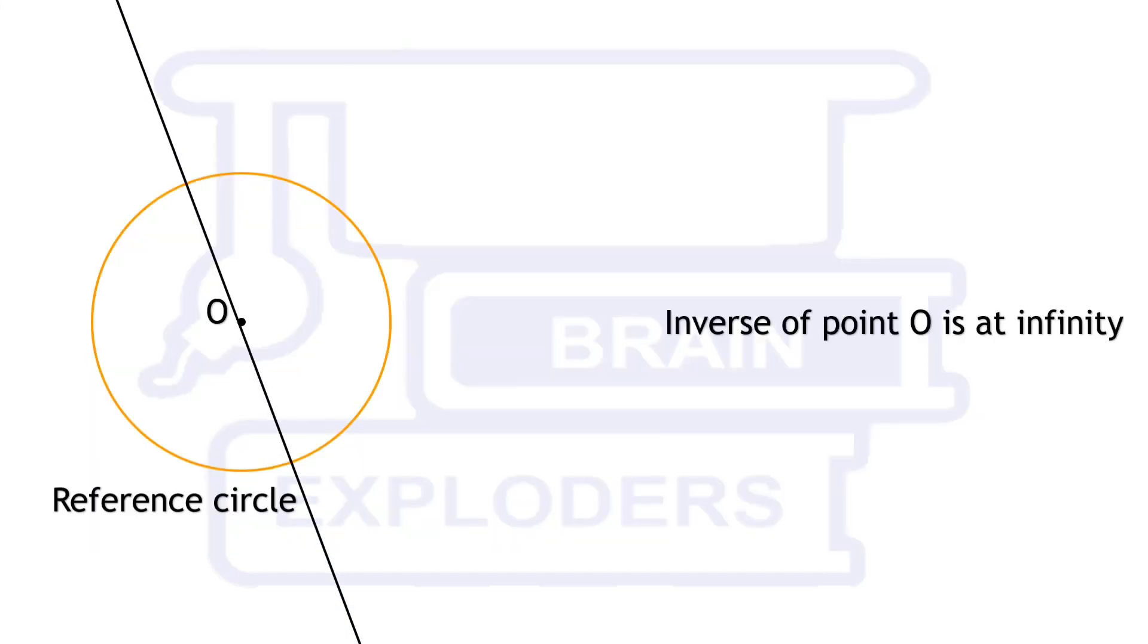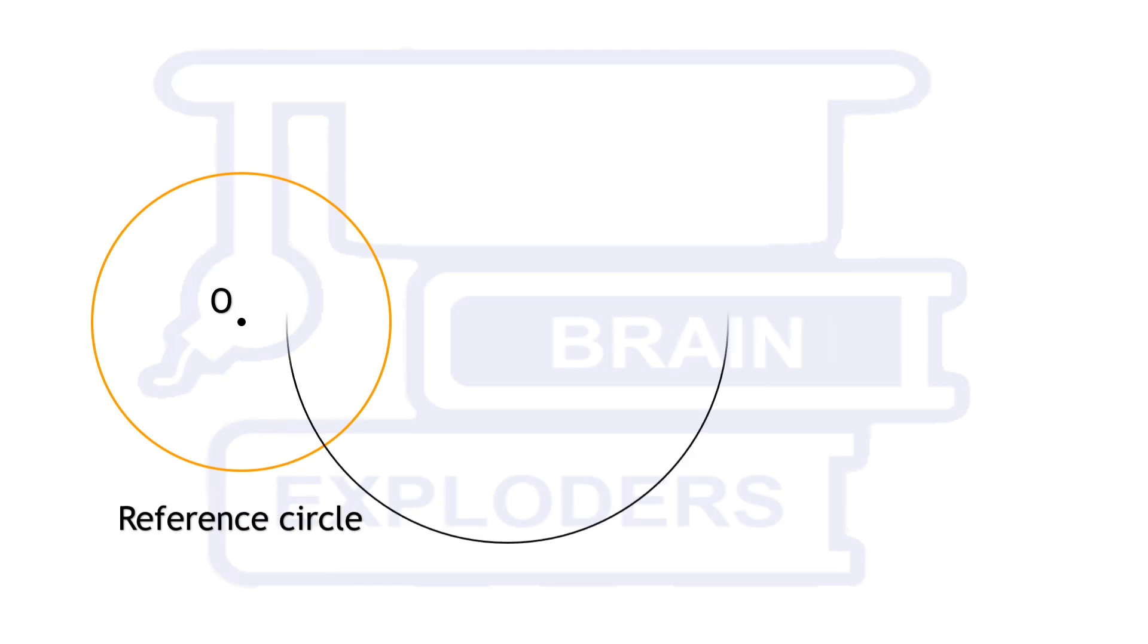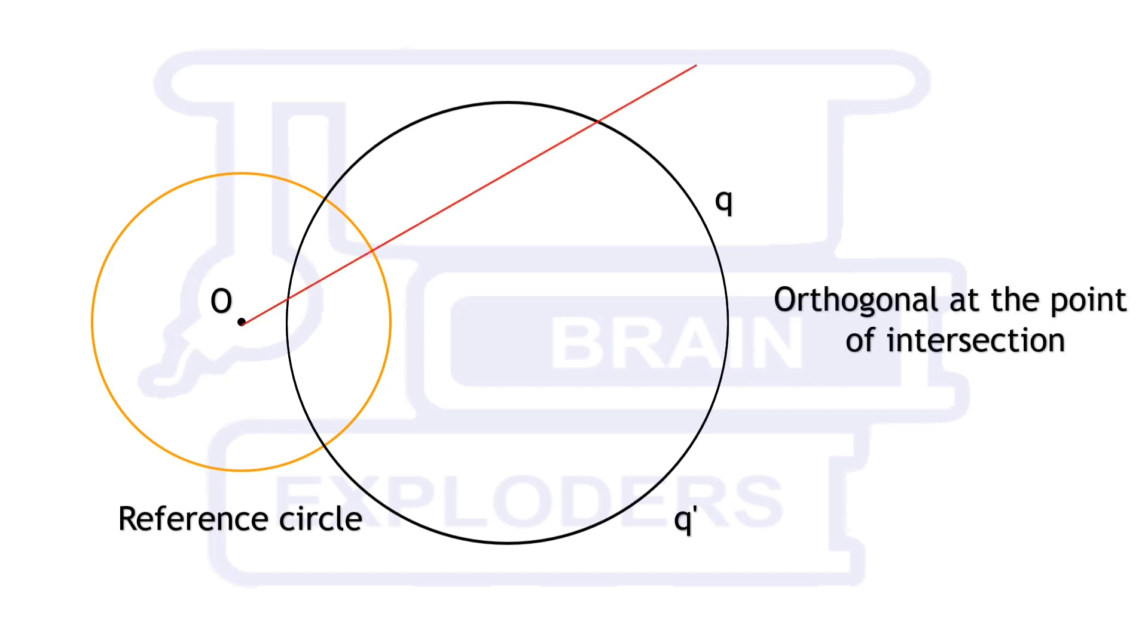Inverse of a line passing through the center of circle is the line itself. Not only line, all the generalized circles which are orthogonal to reference circle are inverse of themselves.